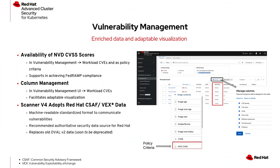On to vulnerability management, where ACS Scanner v4 now includes NVD CVSS scores — that's v3 or v2 — to help organizations meet FEDRAMP requirements alongside vendor-specific scores, and allows policies to be built using these scores. The workload CVEs UI in ACS vulnerability management has been enhanced with column management for better usability. Additionally, ACS Scanner v4 has transitioned to using Red Hat CSAF VEX data instead of Oval v2 as the authoritative source for Red Hat workload CVEs. This switch enables standardized, machine-readable vulnerability data, improving automation in the vulnerability management process.